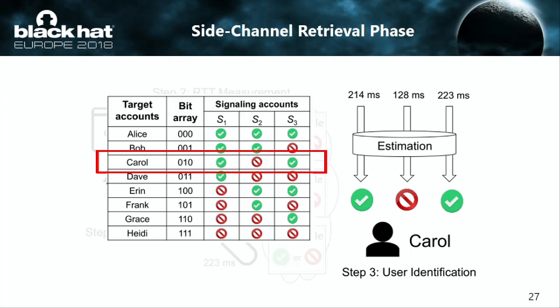The attacker retrieves a bit sequence from these estimations. A sequence of blocking, non-blocking, and blocking means 0, 1, 0 — so the visitor is identified as Carol.